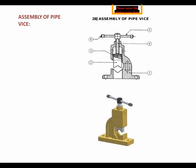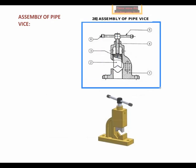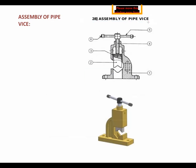If you know properly how to assemble and disassemble the parts, and if you know the different names of parts, then you can draw easily the assembly drawing which is shown here. Hatching lines indicate it is a cut section. In this way we have to draw different assembly drawings from the given detailed drawings.